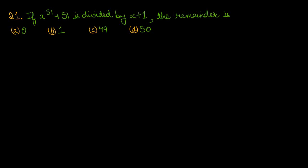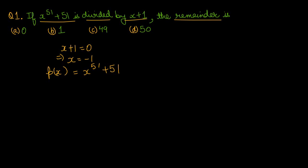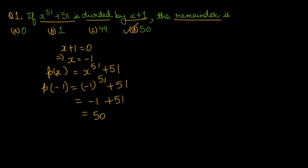Question number 1: if x power 51 plus 51 is divided by x plus 1, the remainder is. यह remainder निकालना है जब इस polynomial को divide किया जाए x plus 1 से। तो हम x plus 1 को 0 के equal करते हैं, यहाँ से x की value आई minus 1। हमारे पास polynomial है p(x) = x^51 + 51। इसमें minus 1 fit करने पर: (-1)^51 + 51 = -1 + 51 = 50। तो remainder आ गया 50, that is option number D is the right one.